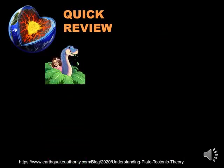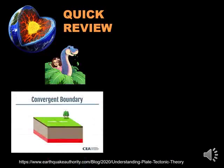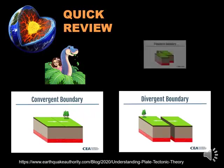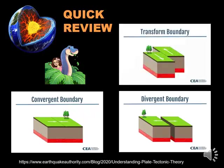From our previous lessons, we came to know the different types of boundaries, or edges, where two plates meet. When two plates come together, it is known as a convergent boundary. A divergent boundary occurs when two tectonic plates move away from each other. Two plates sliding past each other forms a transform plate boundary.